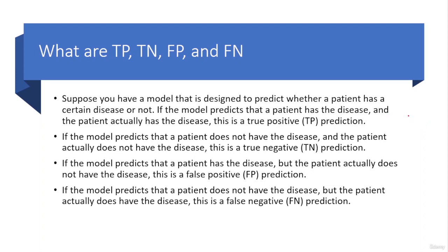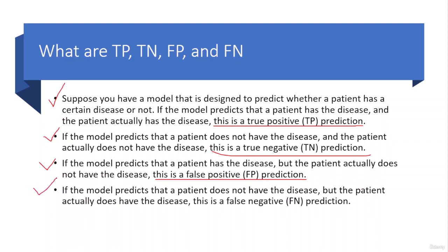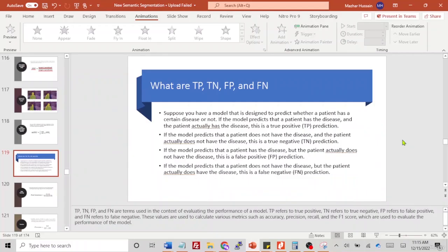Consider an example to understand these terms. Suppose you have a model designed to predict whether a patient has a certain disease or not. If the model predicts a patient has the disease and the patient actually has the disease, this is a true positive prediction. If the model predicts the patient does not have the disease and the patient actually does not have the disease, that is a true negative. If the model predicts a patient has the disease but the patient actually does not, this is a false positive. And if the model predicts a patient does not have the disease but the patient actually does, this is a false negative. These terms are used to calculate accuracy, precision, recall, and F score.